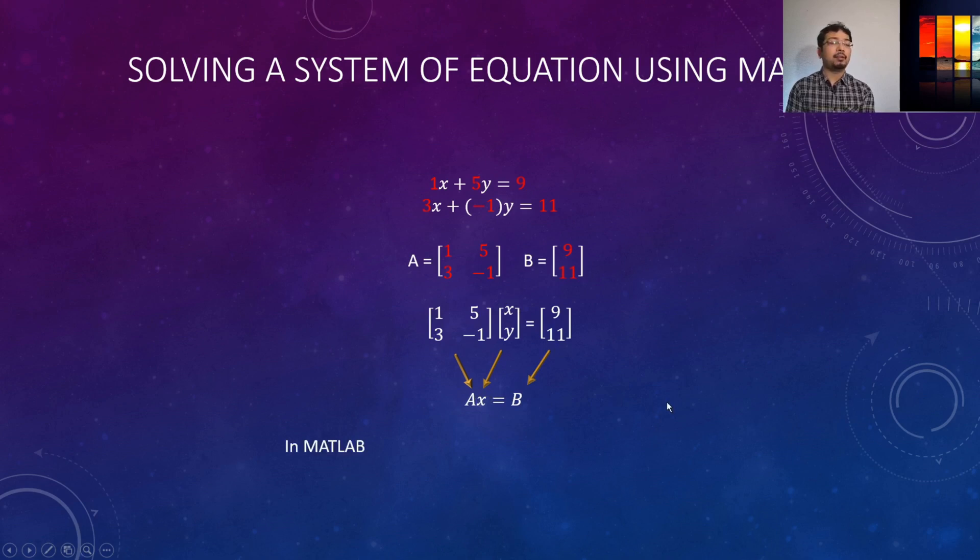So in MATLAB let's see how can we define these matrices. So the A matrix has 1 5 in the rows and then we have a next line and 3 -1. So we'll write 1 space 5 and then put a semicolon here and then put 3 and negative 1 here. So as you can see that semicolon represents a new line or the next row.